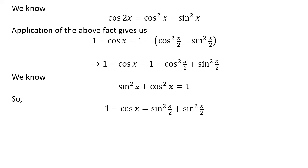So, 1 minus cosine of x is equal to square of sine of half of x plus square of sine of half of x.